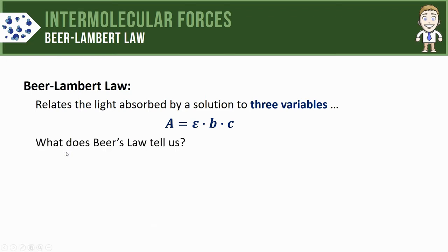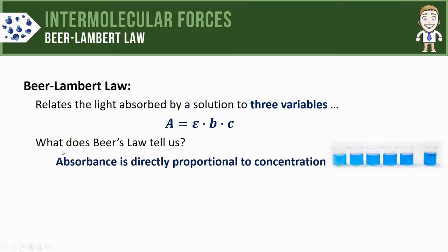So what does the Beer-Lambert Law tell us? It doesn't really tell us a whole lot new—most of this we already talked about in the last video. But let's summarize the mathematical version anyway. The first thing it points out is that absorbance is directly proportional to concentration.